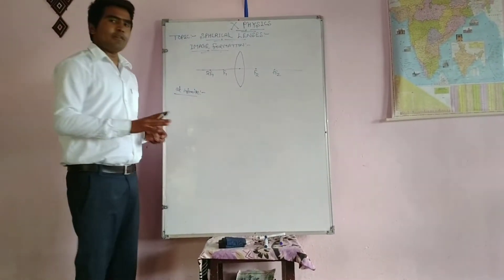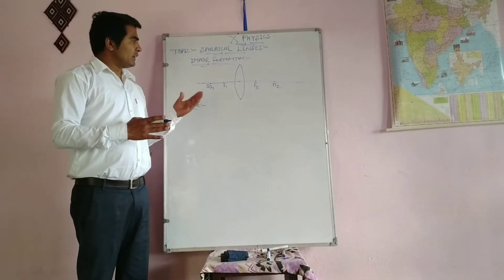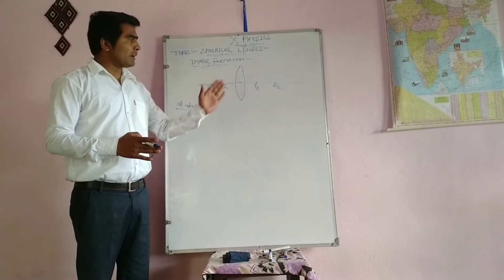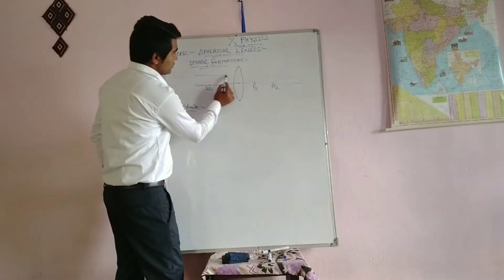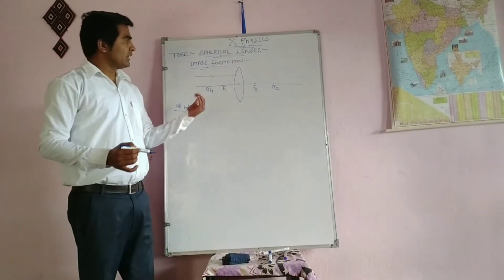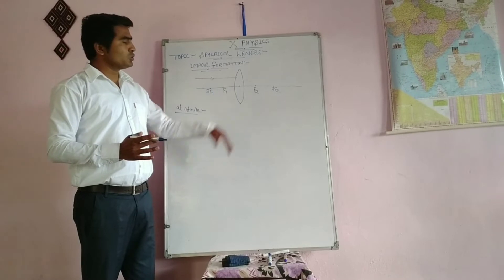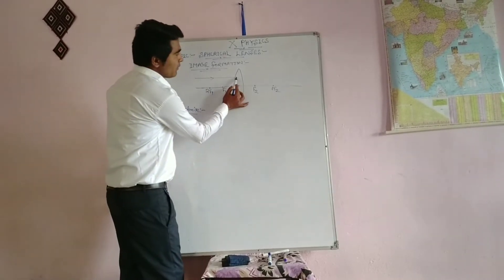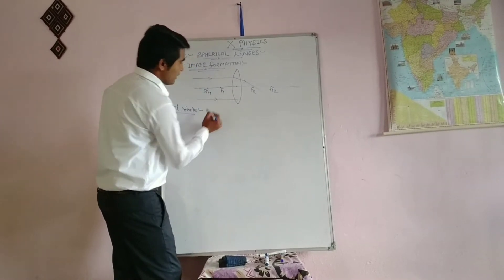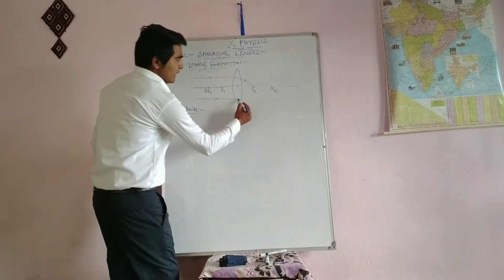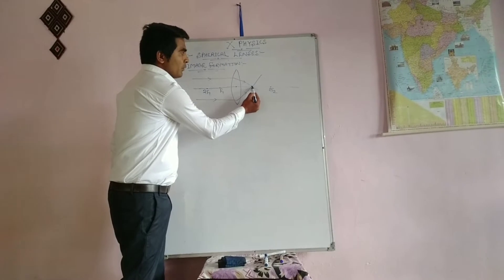First condition: when the object is at infinite, we do not put our object on the principal axis. It means that light rays come parallel to the principal axis. As discussed in the previous video about rules of convex lenses, when light rays go parallel to the principal axis, after refraction they pass through the focus. A second ray, also parallel to the principal axis, will go through the focal point after refraction. This gives us the position of the image.